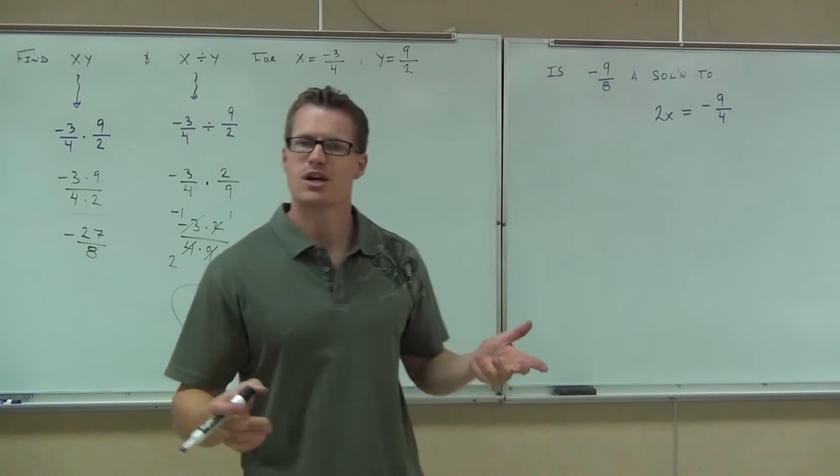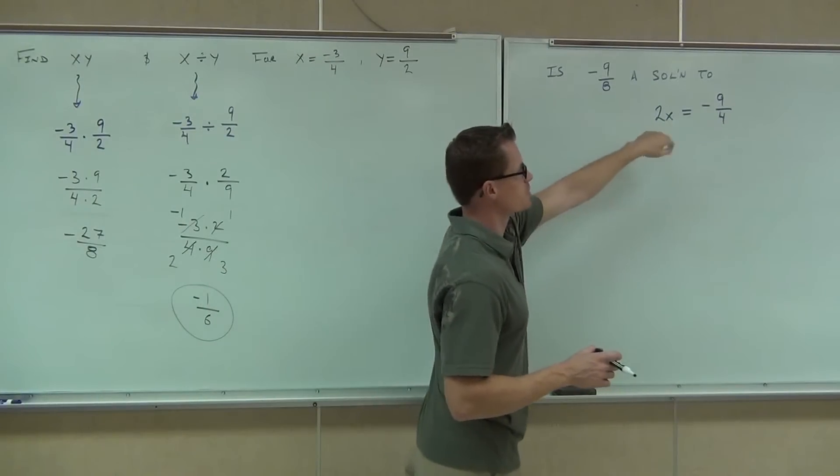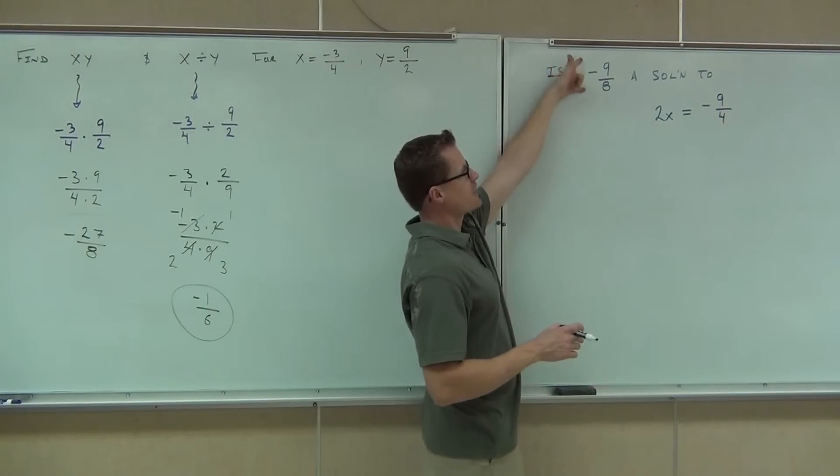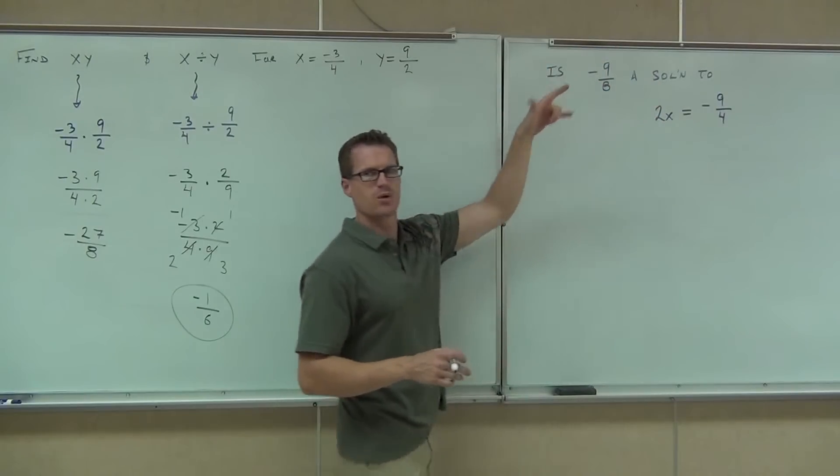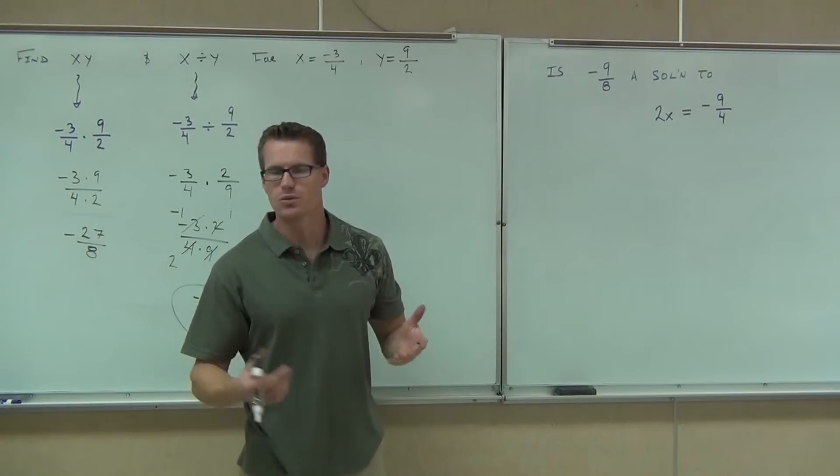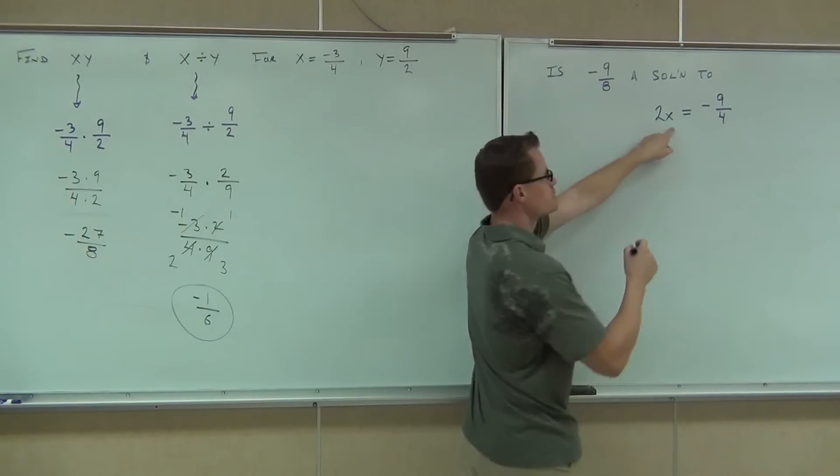So what we do here is if I'm asking is negative 9/8 a solution to this problem, we're taking our negative 9/8, substituting in for our variable and we're seeing if these things are in fact equal. So in our case, we'll have, what's the 2x mean by the way?